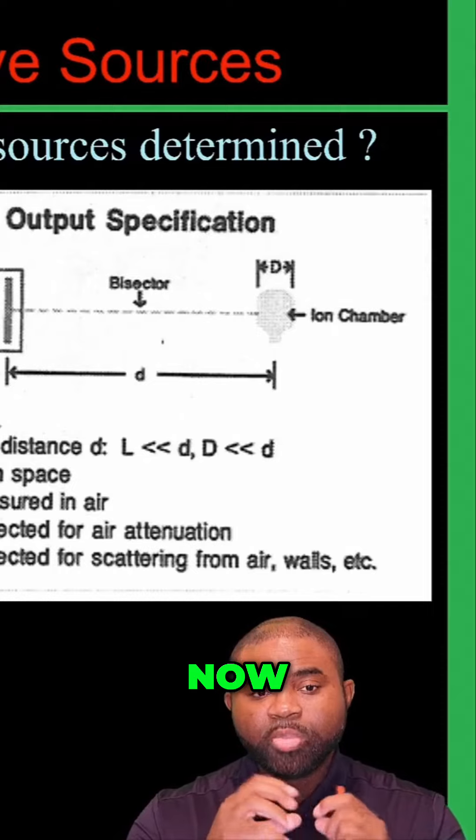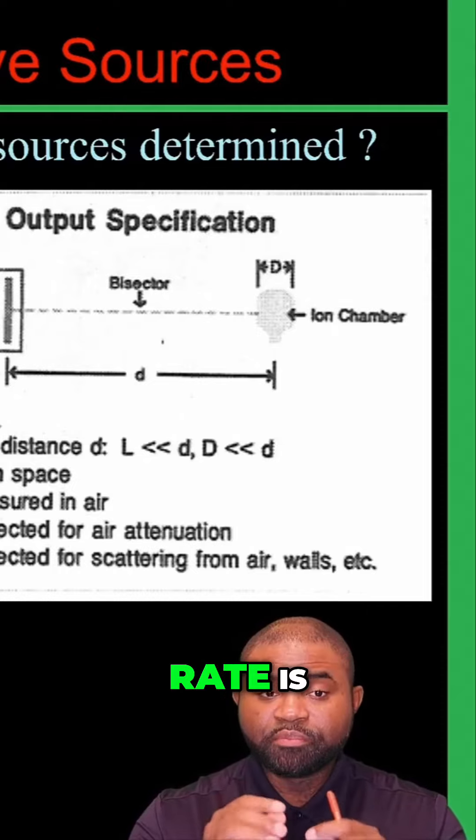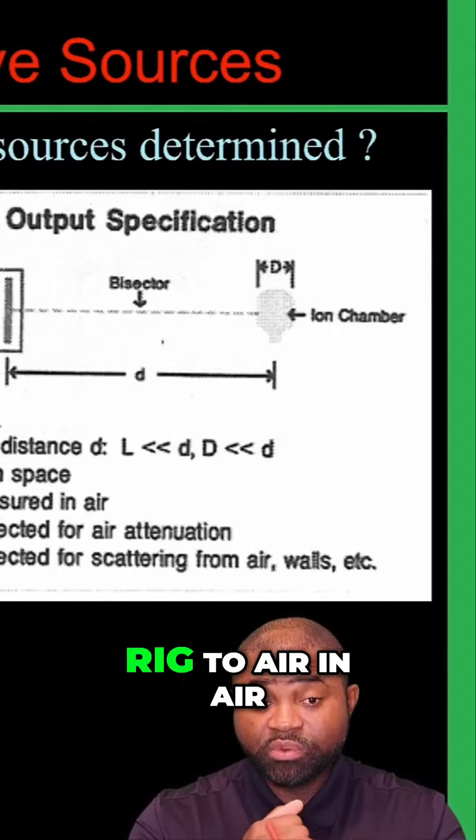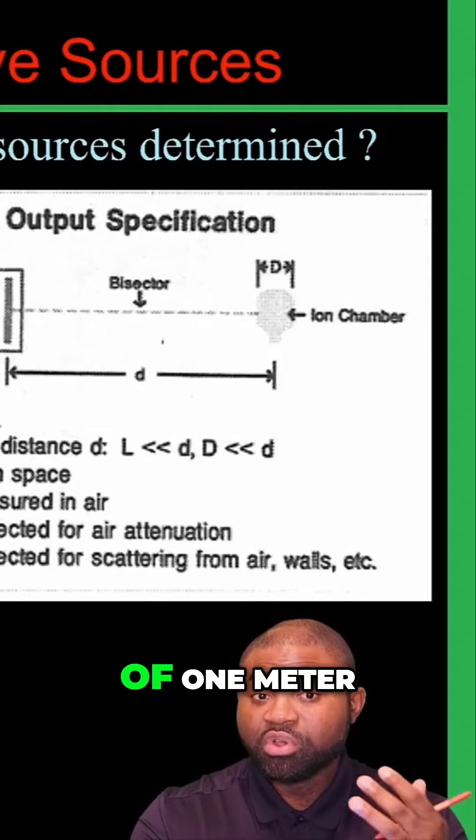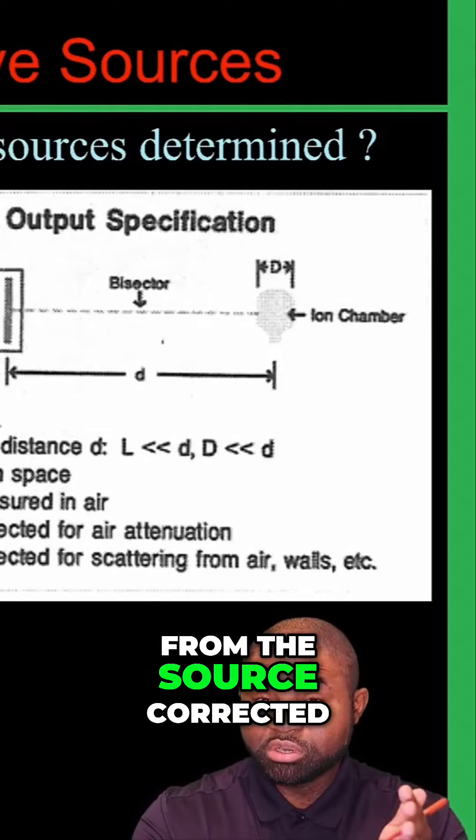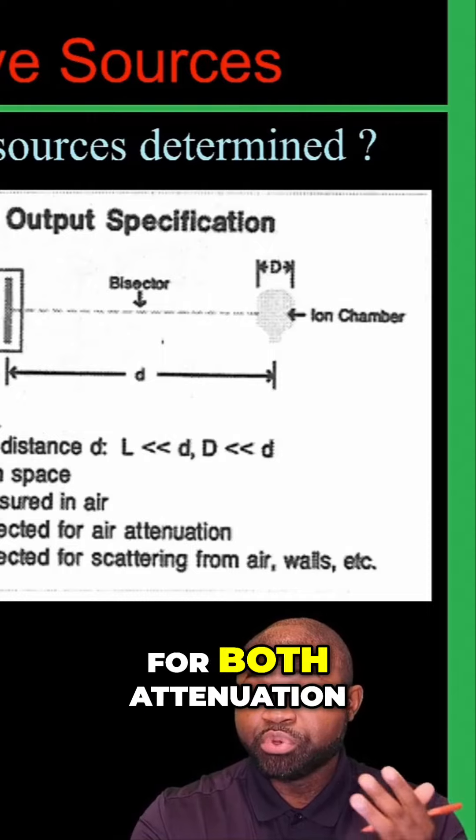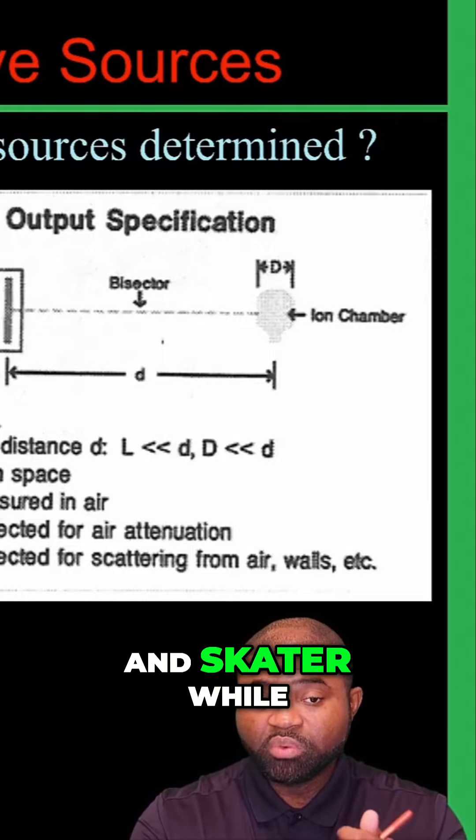Now, the reference air camera rate is essentially the air camera rate to air in air at a reference distance of 1 meter from the source corrected for both attenuation and scatter.